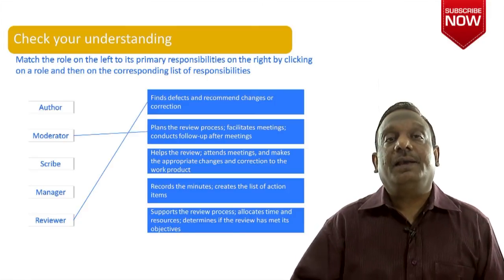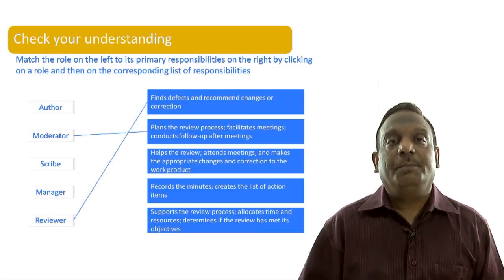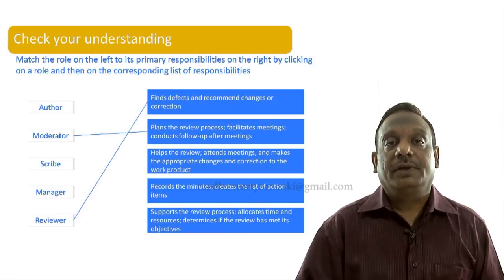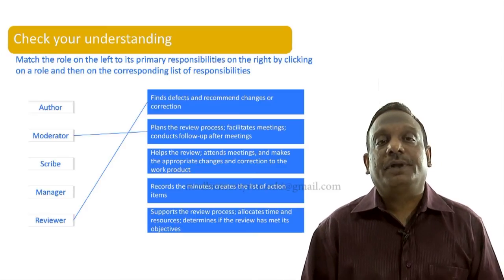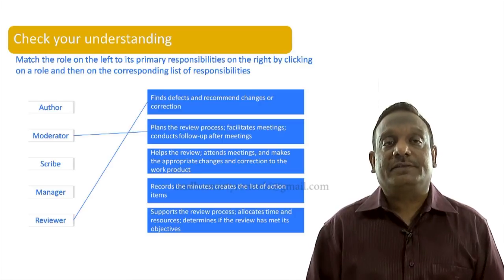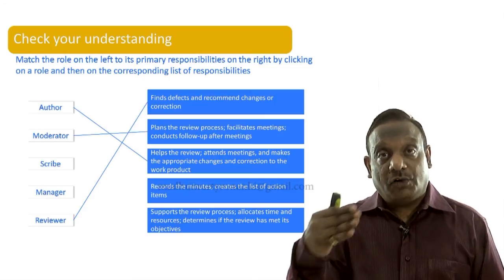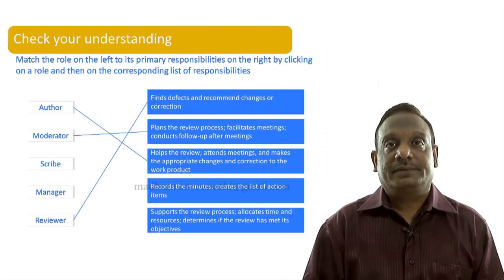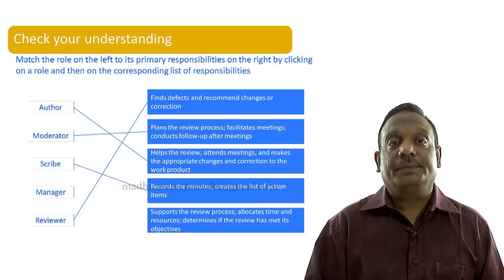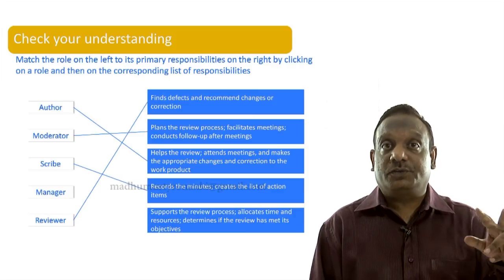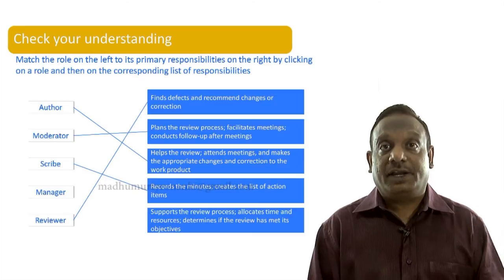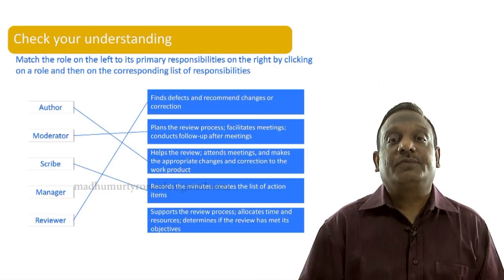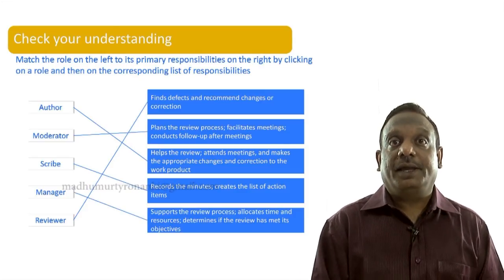'Helps the review, attends meetings, and makes the appropriate changes and corrections to the work product' — that is the responsibility of the author. 'Records the minutes and creates the list of action items' — that is the scribe. And 'supports the review process, allocates time and resources, and determines if the review has met its objectives' — that is done by the manager. So moderator plans while manager supports.